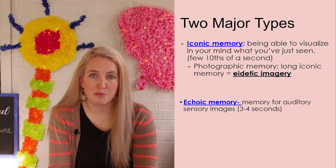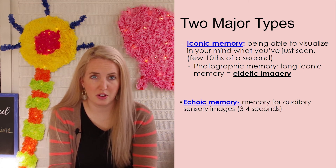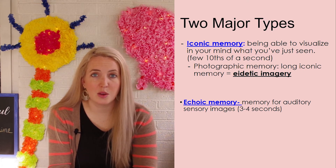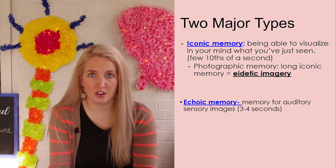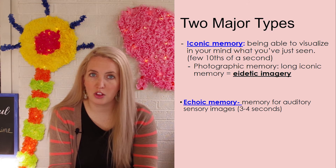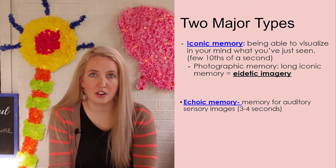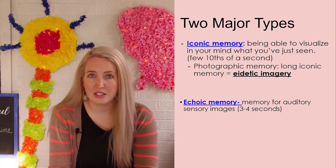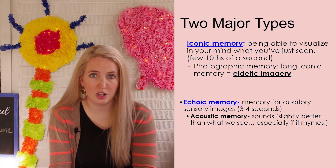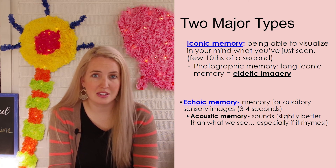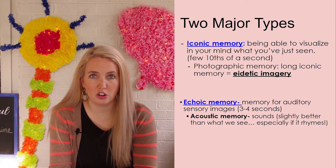Echoic memory is our memory for our auditory experiences. Think of echoic like echo — it's the things that we hear. This lasts a little bit longer in our memory, about three or four seconds, as opposed to the few tenths of a second that our iconic memory lasts for. The bonus is, if something sounds good, we refer to that as acoustic memory, and that seems to stick in our minds for even longer.